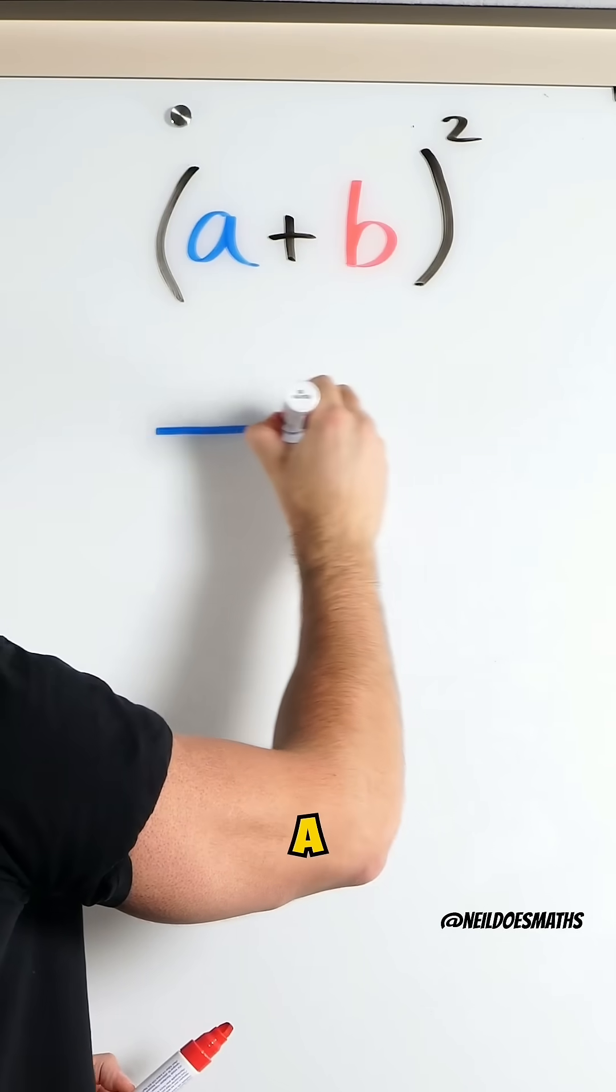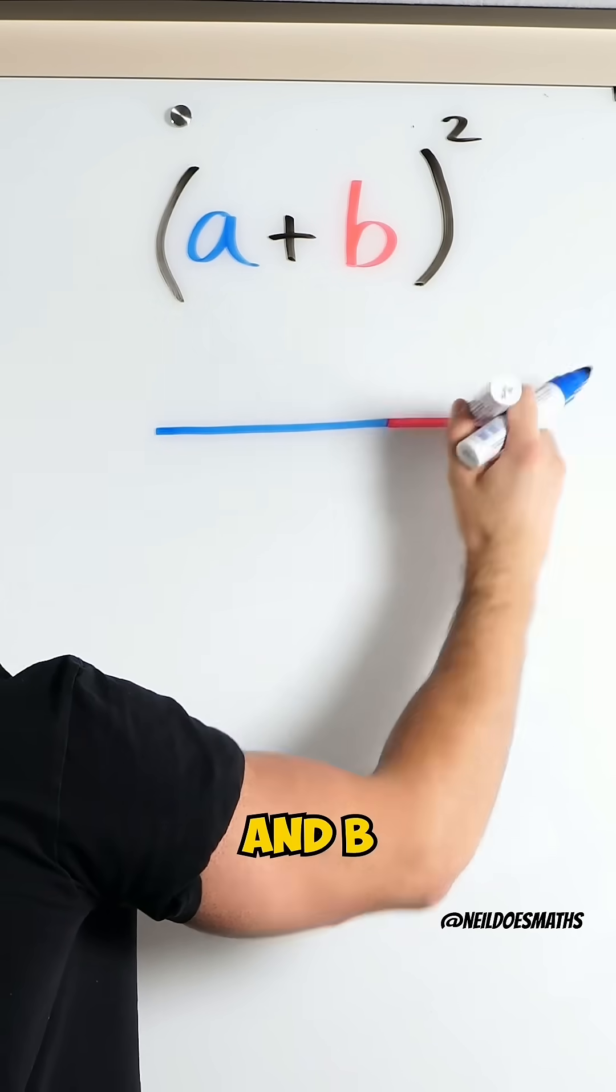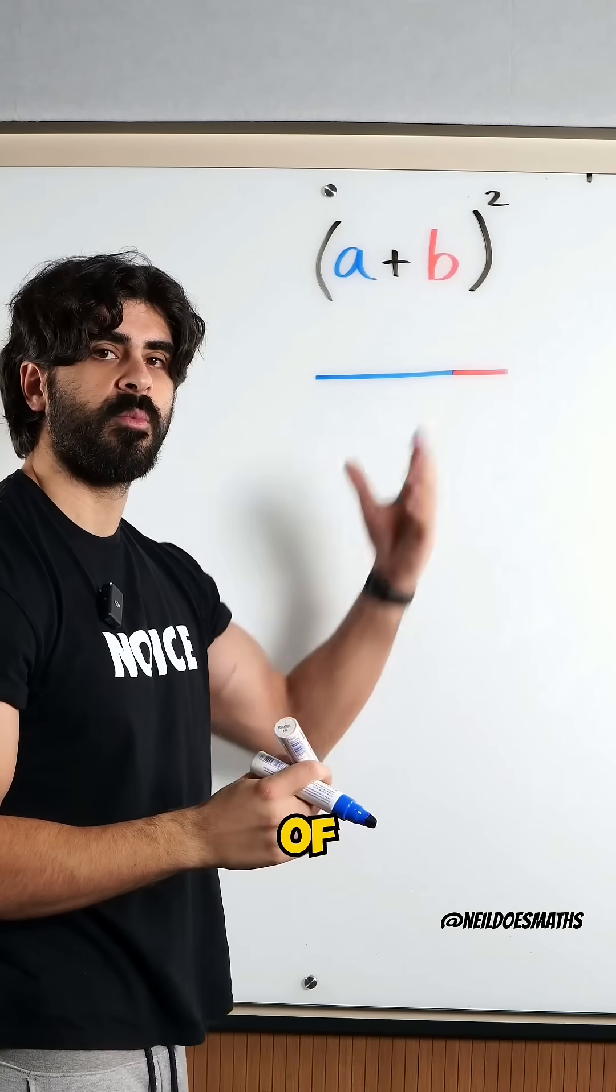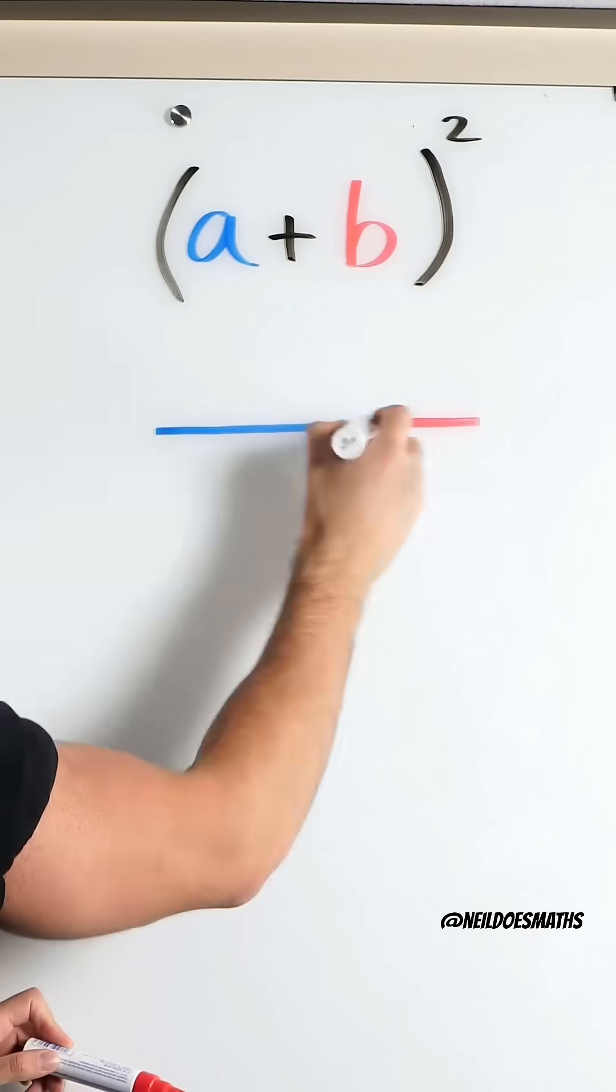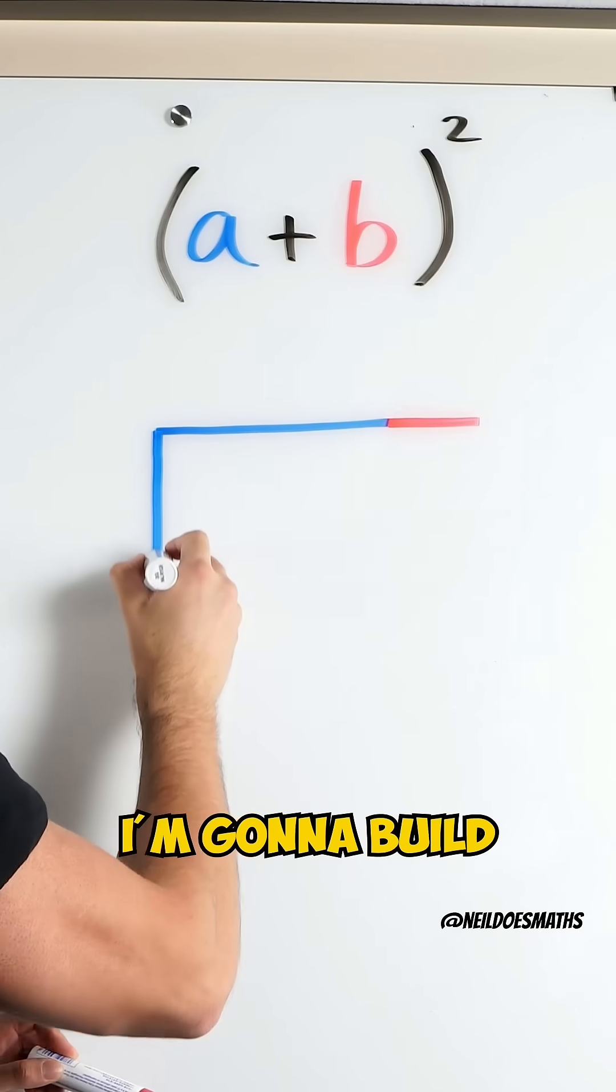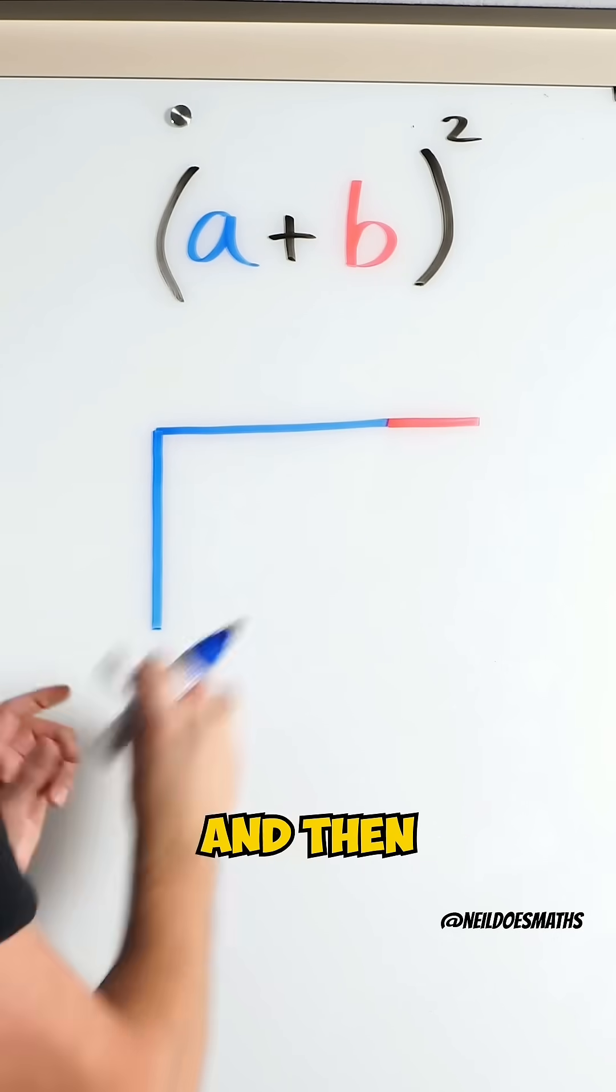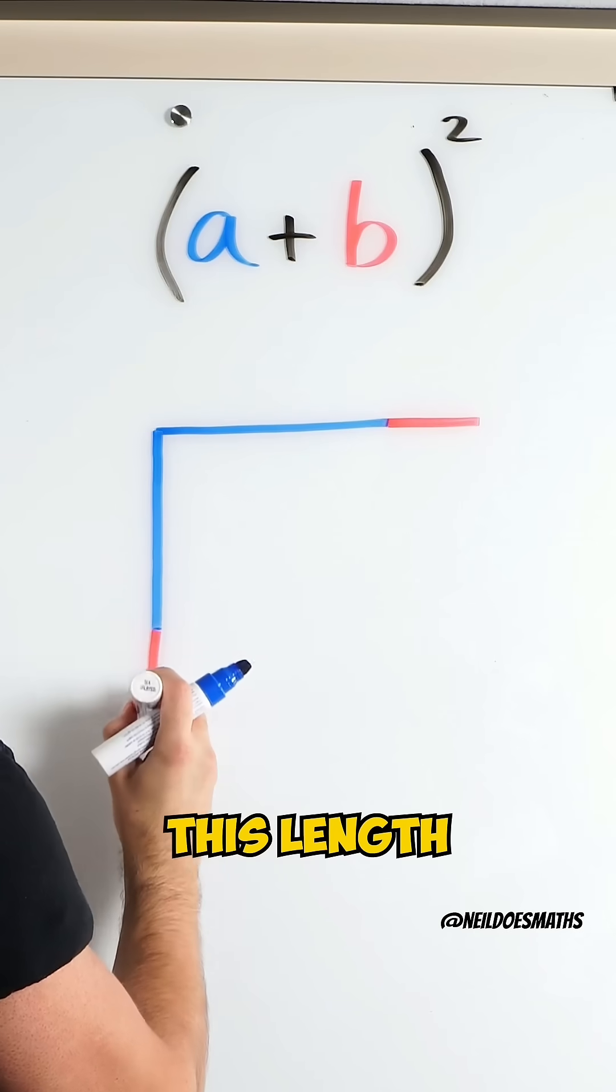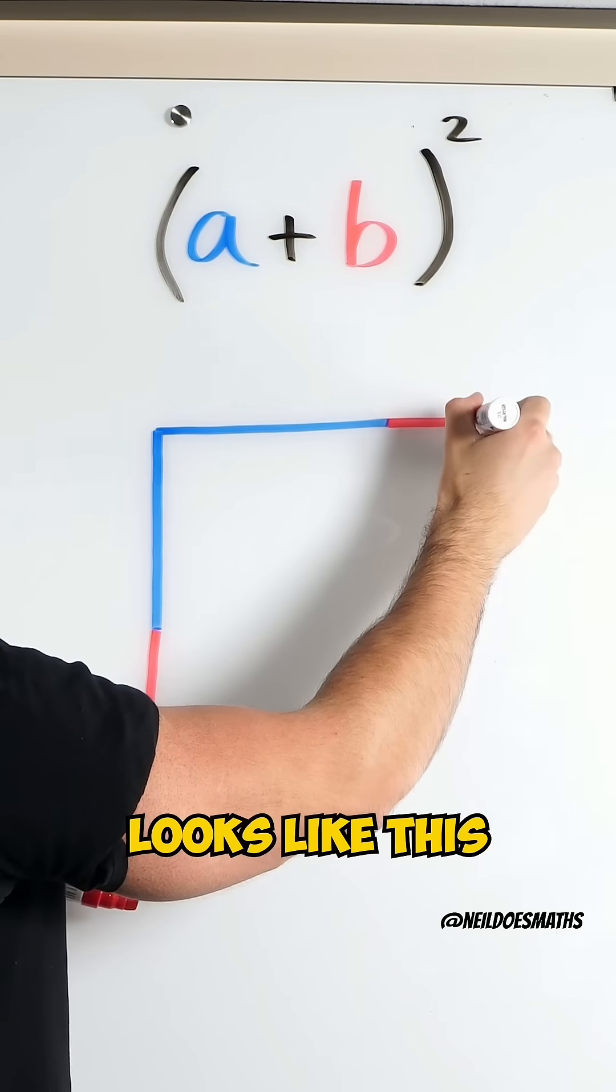We have A and B. That's the side length of one of my lengths of the square. So, I'm going to build on the other side and then this length. My square looks like this.